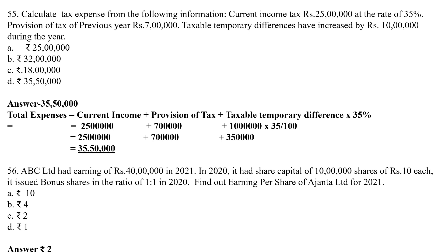Calculate tax expenses from the following information: Current income tax is Rs. 25 lakh at the rate of 35%, provision of tax of previous year Rs. 7 lakh, taxable temporary difference has increased by Rs. 10 lakh during the year. The formula is: total tax expense = current income tax + provision of tax + (taxable temporary difference × 35%). So: Rs. 25 lakhs + Rs. 7 lakhs + (Rs. 10 lakhs × 35%) = Rs. 35.50 lakhs. Your total tax expense will be Rs. 35 lakhs Rs. 50,000.